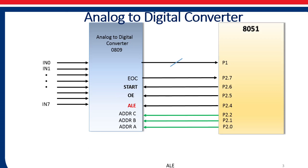Here we have used port 1 to read the digital outputs of ADC, and the control signals are given through port 2 of 8051.